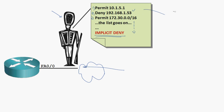Standard access lists are somewhat limited because you can only filter based on source IP address information. That allows you to say 10.1.5.1 you are permitted, or 192.168.1.53 you are denied. The question is: from what? It depends on where you apply the access list. If you're using these for security, you go to the interface and apply it either in the inbound or outbound direction — and what a difference that makes.